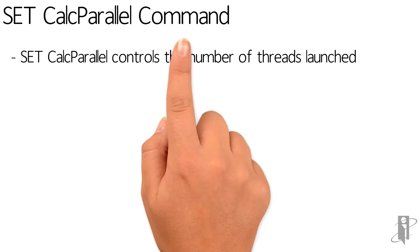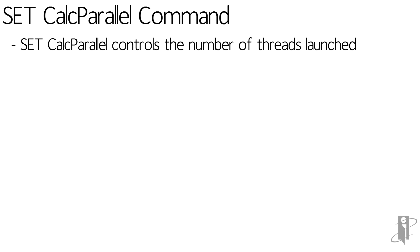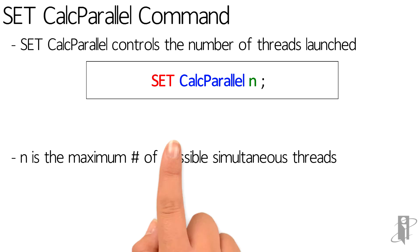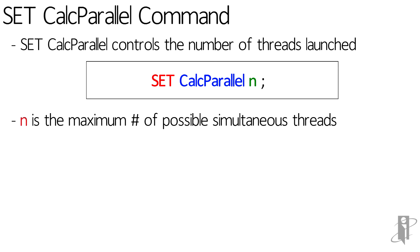The syntax is pretty simple. At the top of your calc script — or theoretically in the middle, which I'll explain in a second — you have a line that says SET CalcParallel followed by a number. That number is the maximum number of threads that you want the calc script to launch.